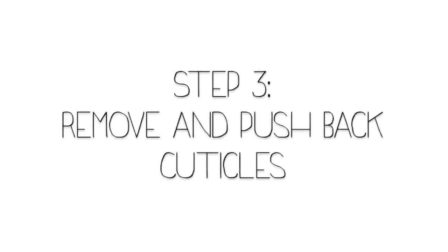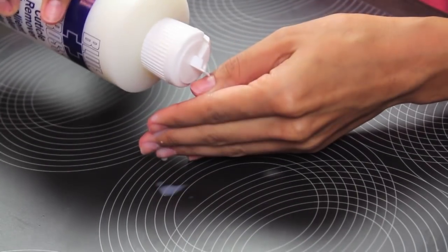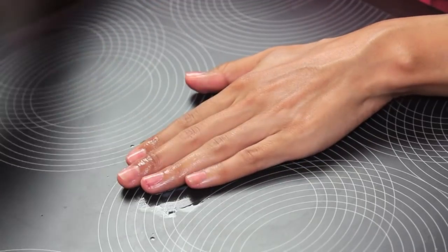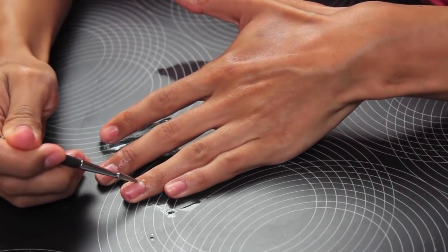Next I'm just going to remove and push back the cuticles, so I'm taking this Blue Cross cuticle remover. It's a product that's been around for a really long time, but it really works very effectively at removing your cuticles. So I just take a cuticle stick and push them back first.